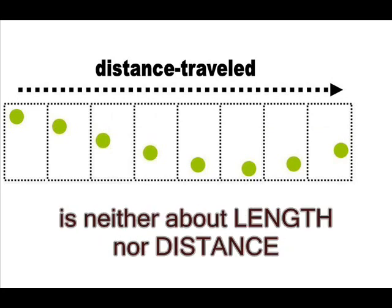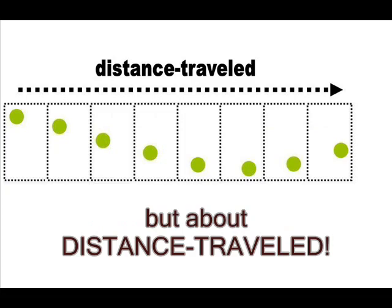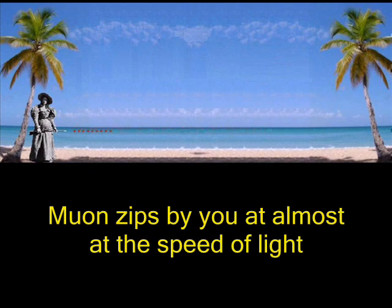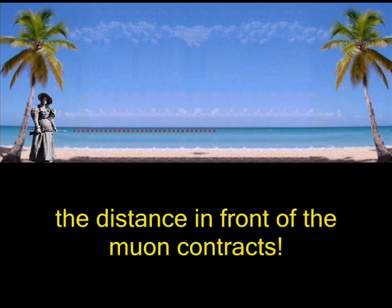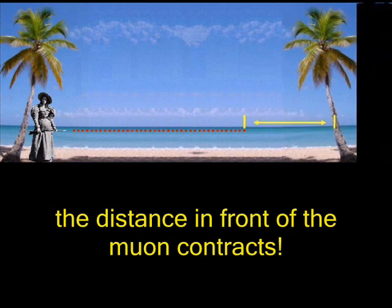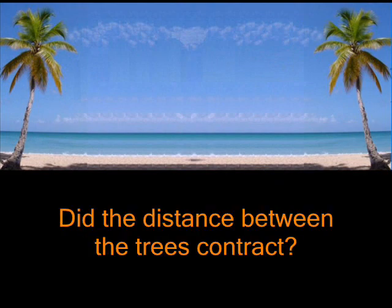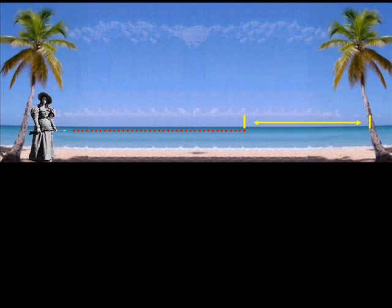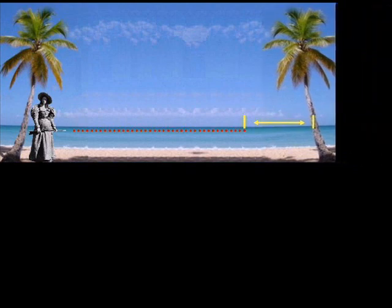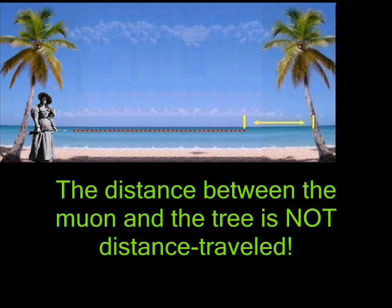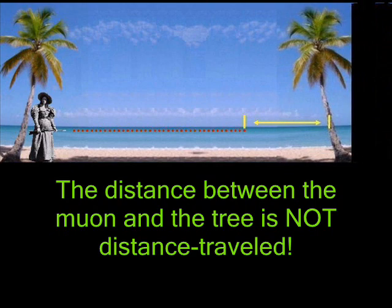A case in point is the contraction theory of special relativity. Relativists claim that if you are standing next to a tree and a particle known as a muon zips by you almost at the speed of light, the distance from the muon to the tree up ahead contracts. The question is whether the static distance between the two trees shrank. If the answer is no, then relativists must be referring to the distance between the muon and the second tree, in which case the muon somehow moved closer to the tree. Again, it would be irrational to claim that the static distance between the muon and the tree contracted.